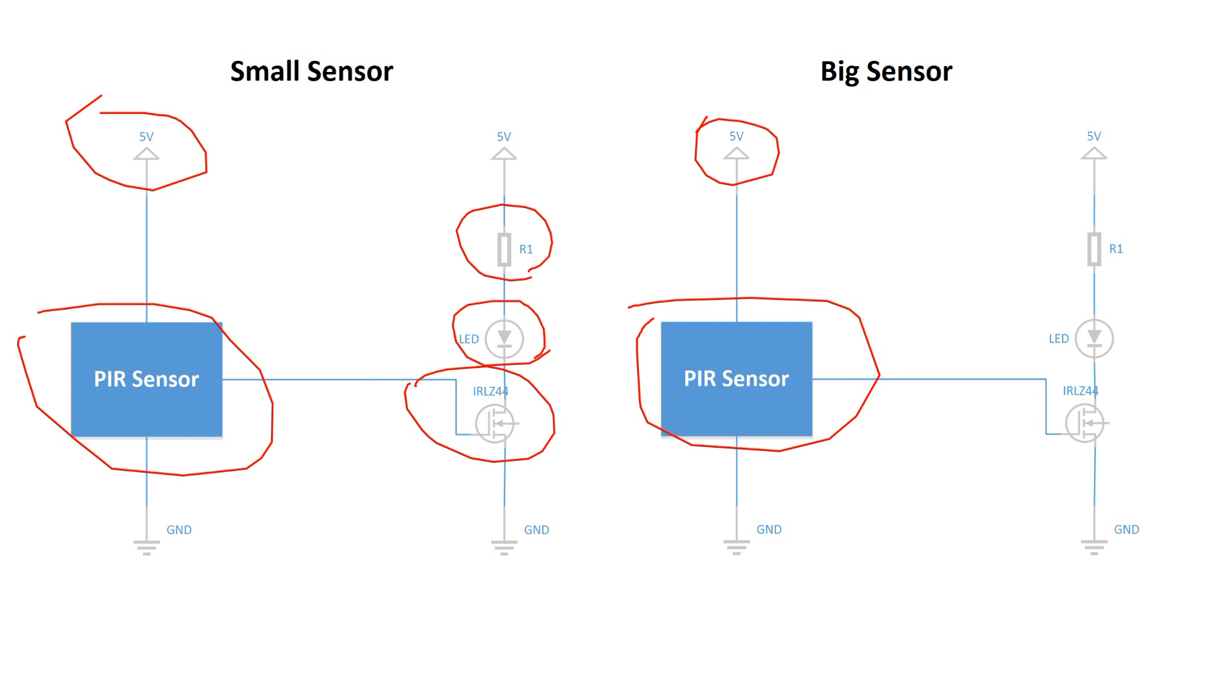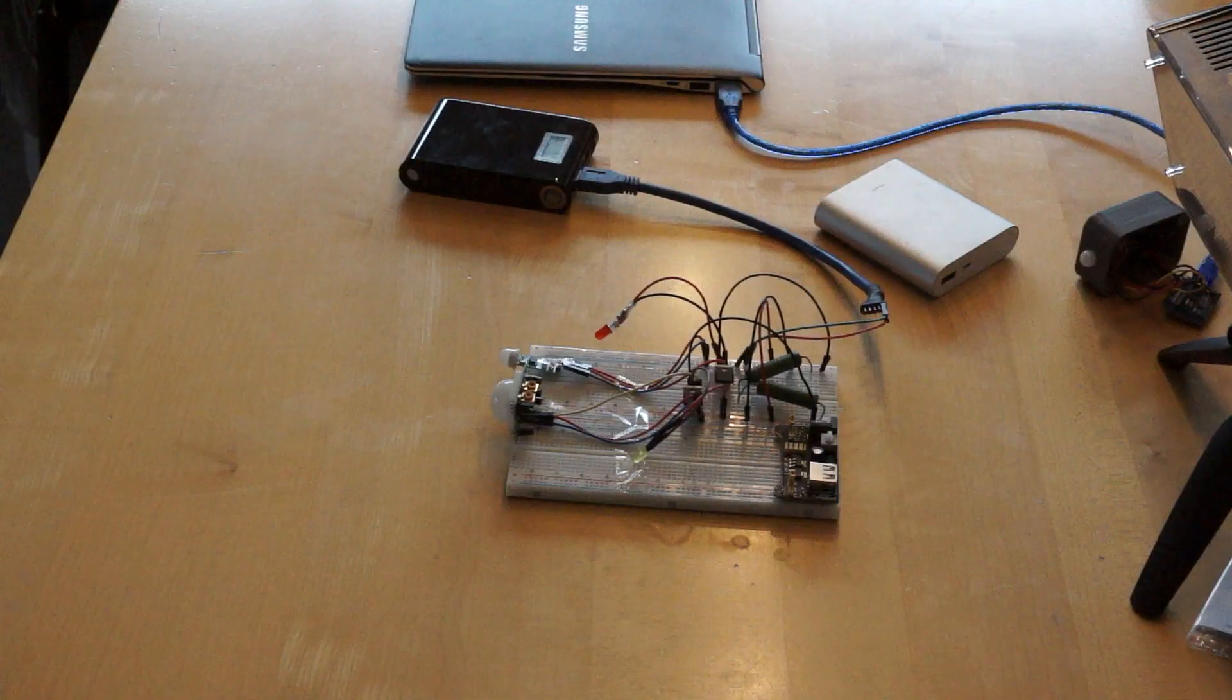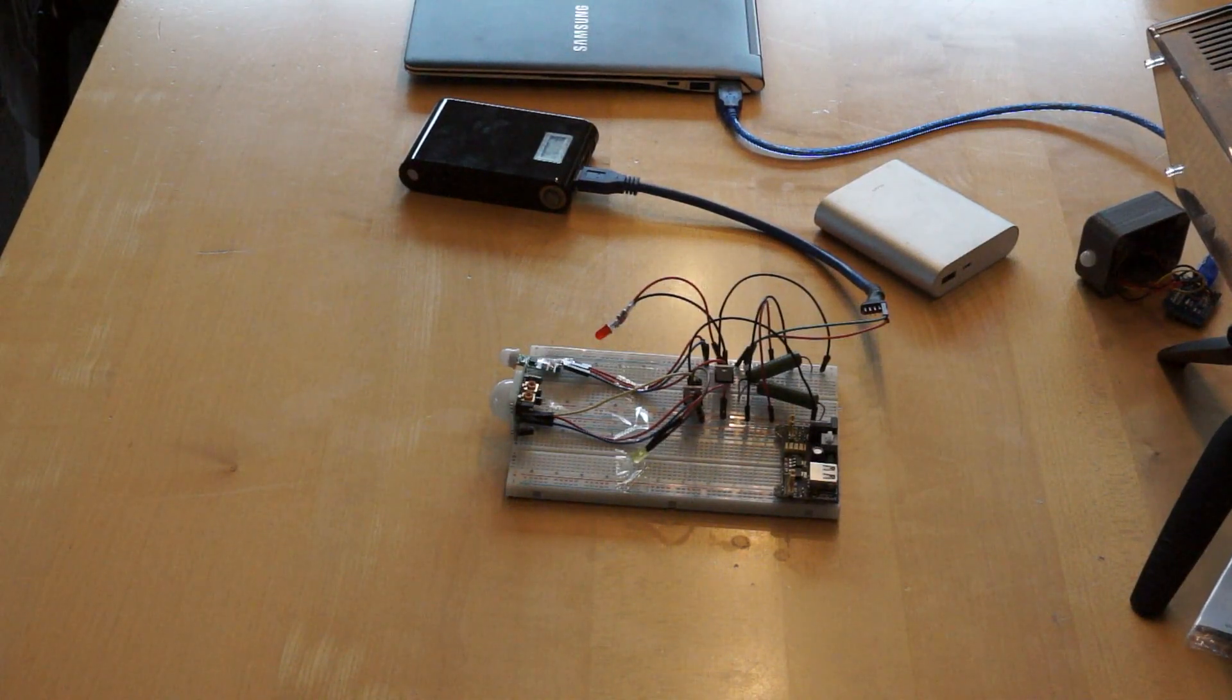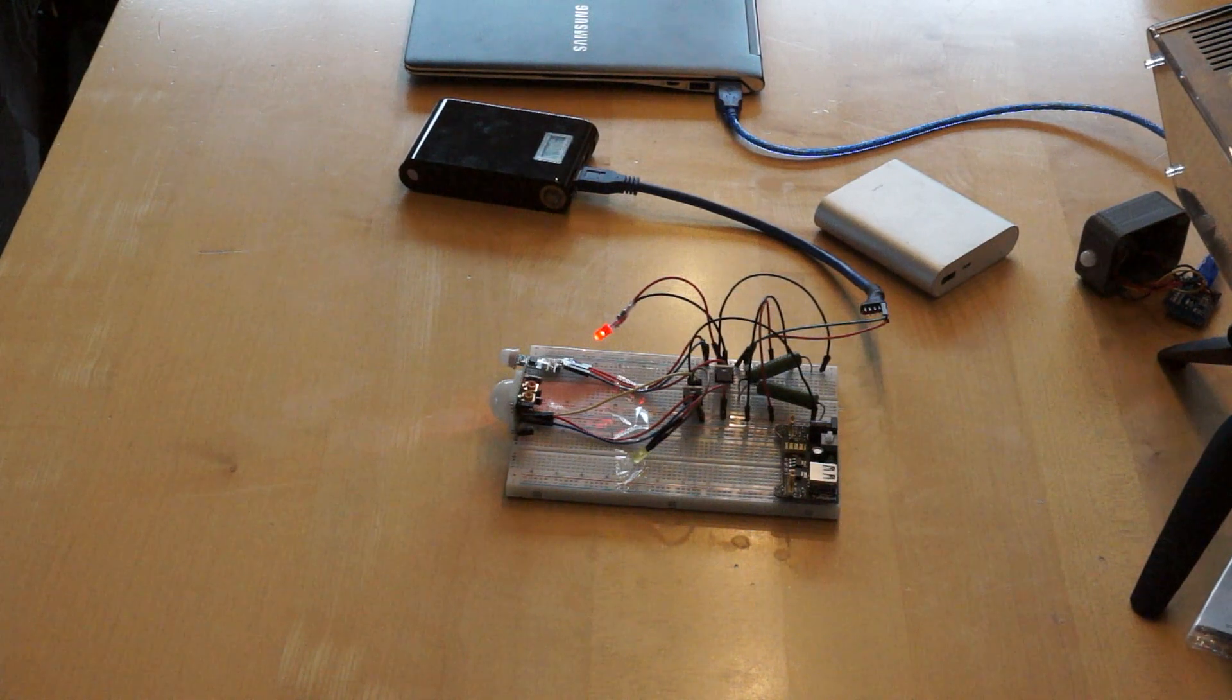The current through the LEDs is limited by resistors. So as soon as a movement is detected, the LED will light up. With this setup, we can compare the behavior of the two sensors directly.